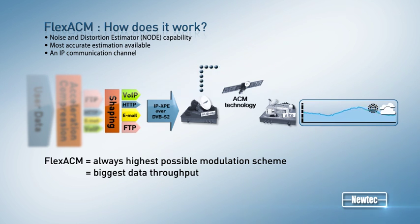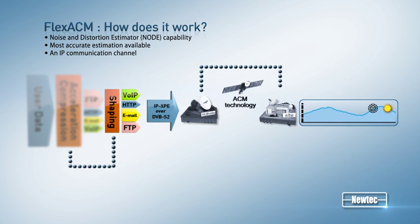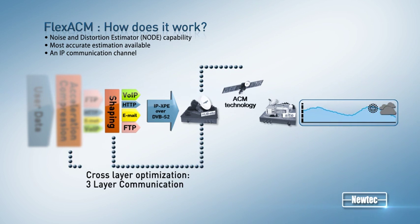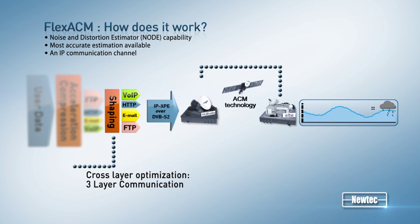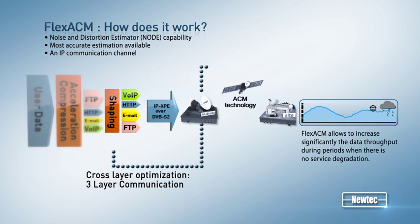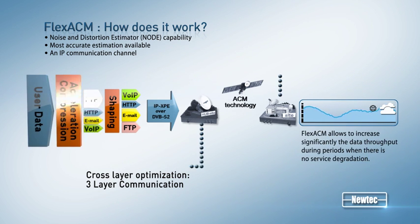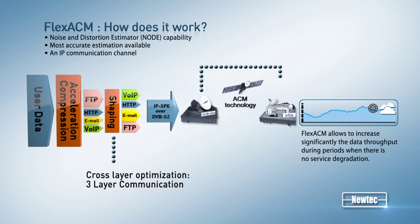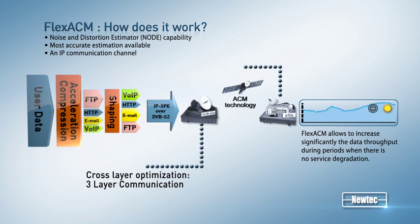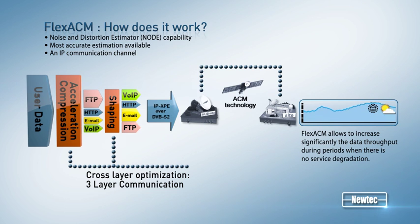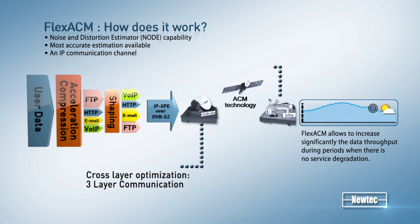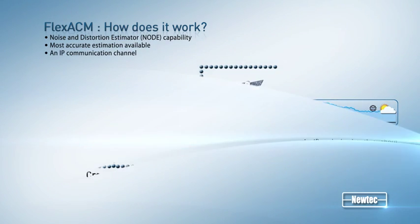To maximize the throughput of the satellite link, FlexACM makes use of cross-layer optimization. Cross-layer optimization applies advanced features such as traffic acceleration to counter transmission delay, dynamic on-the-fly compression to reduce data traffic over satellite, and dynamic shaping to ensure priority of services.